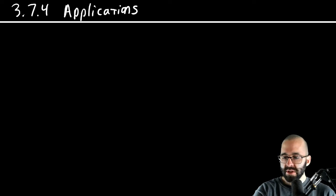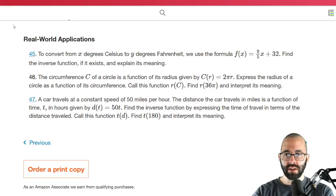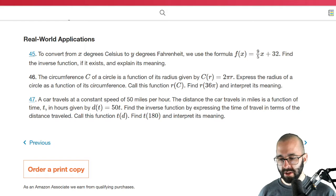Let's do an application problem. We're just going to do number 45 in the book. 45 in the book is right here. It says to convert from x degrees Celsius to y degrees Fahrenheit, we have this formula. You may have used this formula to convert Fahrenheit to Celsius to Fahrenheit.